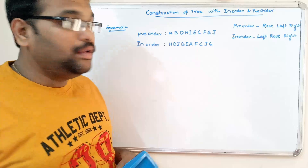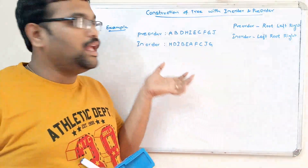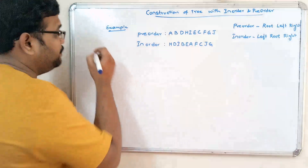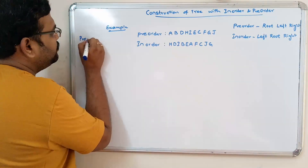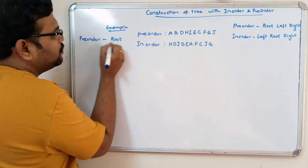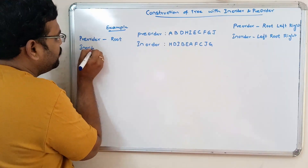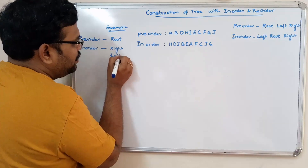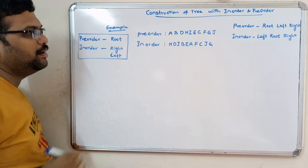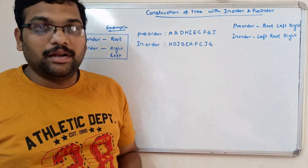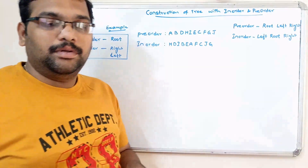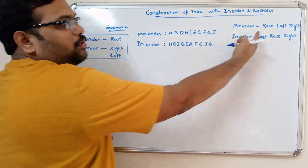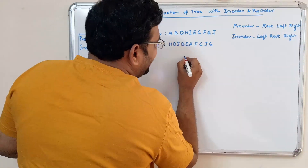In this example we have a larger number of nodes, and with the help of pre-order and in-order we will construct the tree. Following the same steps: from the pre-order we get the root node. From the in-order we get the right and left children. The first element in pre-order is the root, so A will be the root.